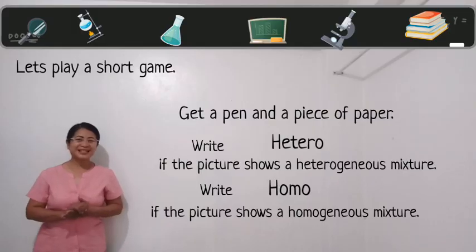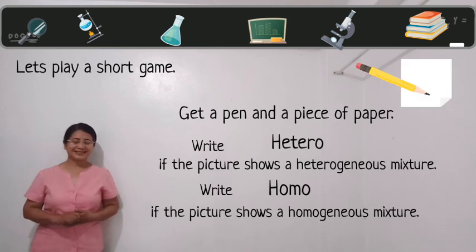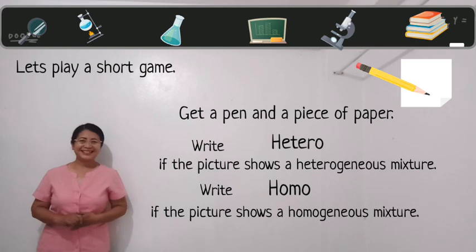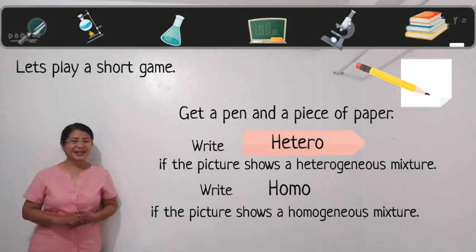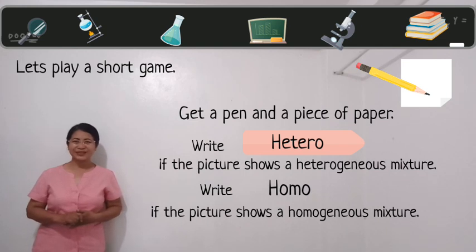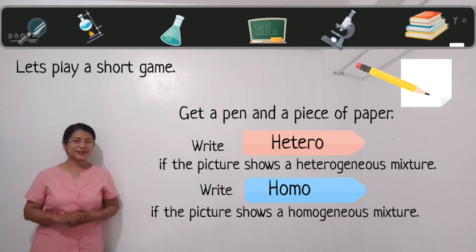This time let's play a short game. Get a pen and a piece of paper. Write hetero if the picture shows a heterogeneous mixture, and write homo if the picture shows a homogeneous mixture.